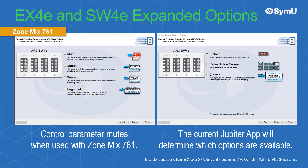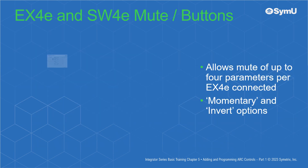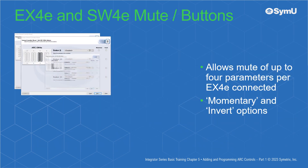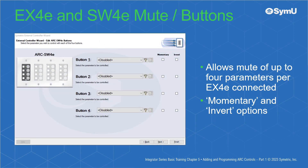With the ZoneMix 761, you can control mutes. In Jupyter apps, the EX4E can control several types of buttons including mutes and actives. Note, however, that not all options are available within every Jupyter app — the Jupyter app currently in use will determine which options are available. The Mute button mode allows you to mute up to four parameters per connected expander, up to a maximum of 16, and you may engage momentary or invert options as well.